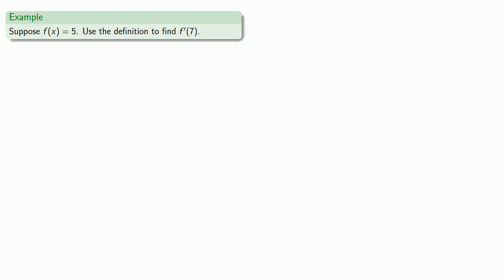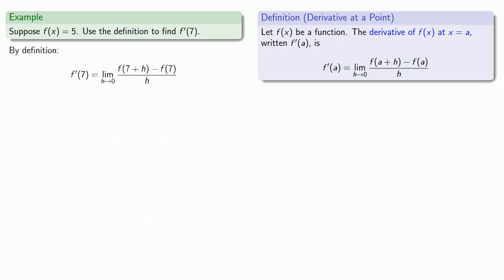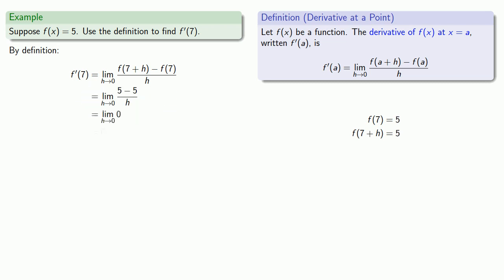We know we should be using the definition because the problem asks us to, so we'll pull that in. To use the derivative, we need to find f(7) and f(7+h). We find those values and substitute them into our difference quotient, and by definition we get a derivative of 0.